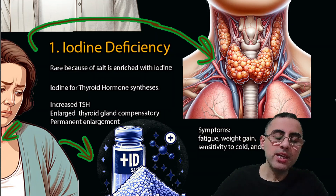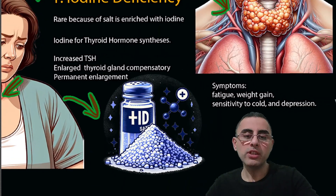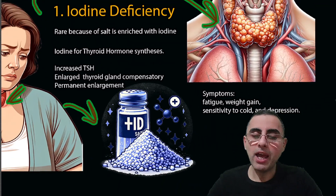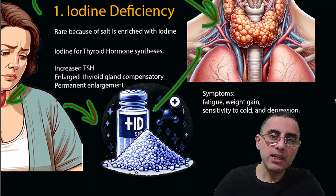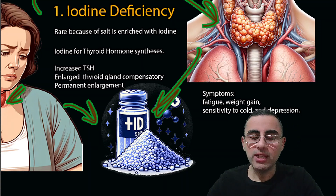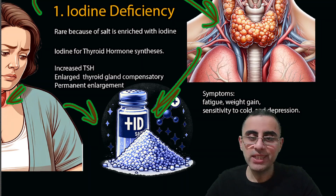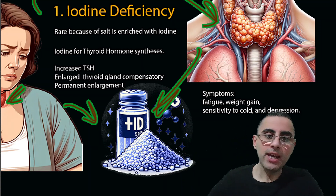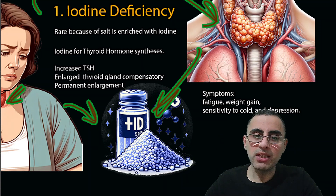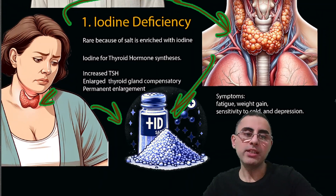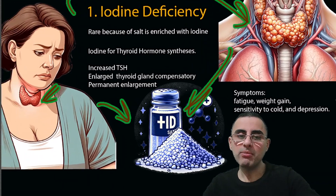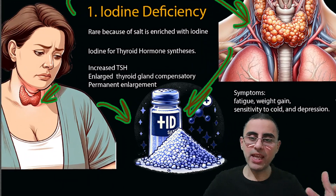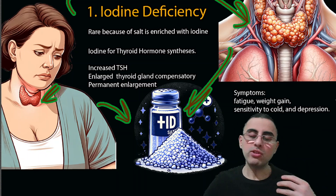This enlargement becomes permanent with severe iodine deficiency. That is why in many countries salt is enriched with iodine — people receive iodine supplementation through enriched salt. This is common practice in most countries nowadays, but there are still some countries without iodine supplementation where iodine deficiency goiter remains a problem. Symptoms include fatigue, weakness, and weight gain due to slower metabolism.